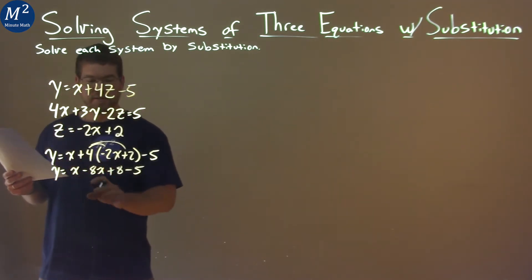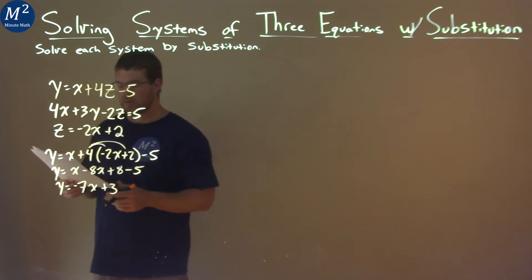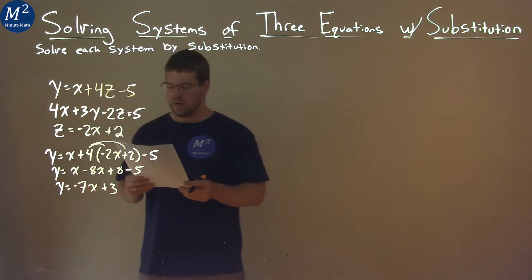From there, we want to keep going. Let's get our like terms together. So y = x - 8x is -7x, and 8 - 5 is 3. So we have y = -7x + 3 here.